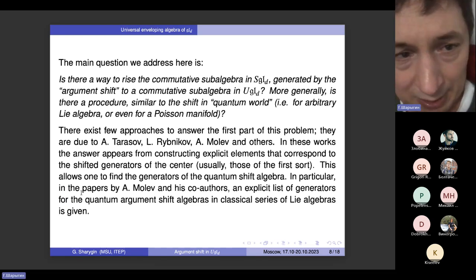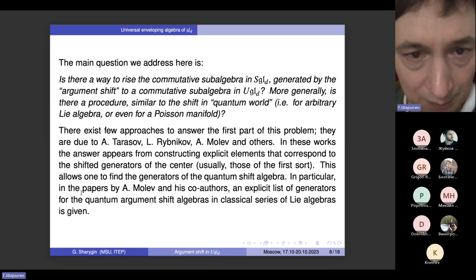So the main question, which we address here, is the following question first asked by Wimberg in 1991. The question is as follows: Is there a way to raise the commutative subalgebra generated by argument shift in SGLD to a commutative subalgebra in UGLD? More generally in any Lie algebra, actually. And also, is it possible to raise the shifting operator, the derivation along the vector field from GLD, from the classical world to the quantum world, to the universal enveloping algebra?